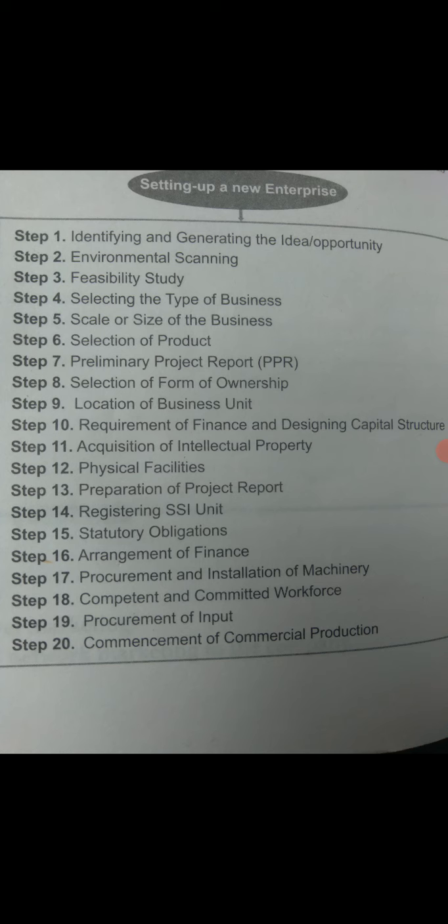The fourth step is selecting the type of business. This means the entrepreneur decides whether the business is going to be an industry or commercial activities, depending upon the market demand and technology required.